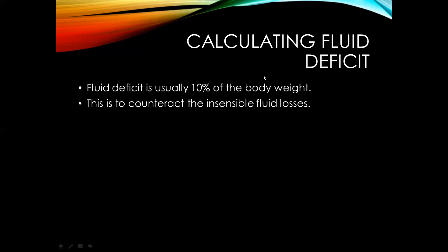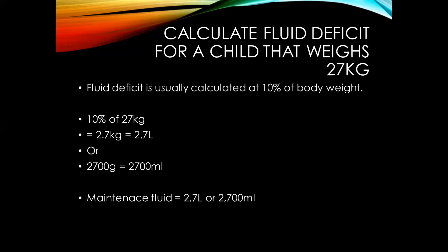Now, calculating fluid deficit. Fluid deficit is usually 10% of the body weight. And why do we administer fluid deficit? This is to counter the insensible fluid losses. So fluid deficit is usually calculated at 10% of body weight. For a child that weighs 27 kg, 10% of 27 kg is 2.7 kg, which is almost equivalent to 2.7 liters, or 2700 mls.